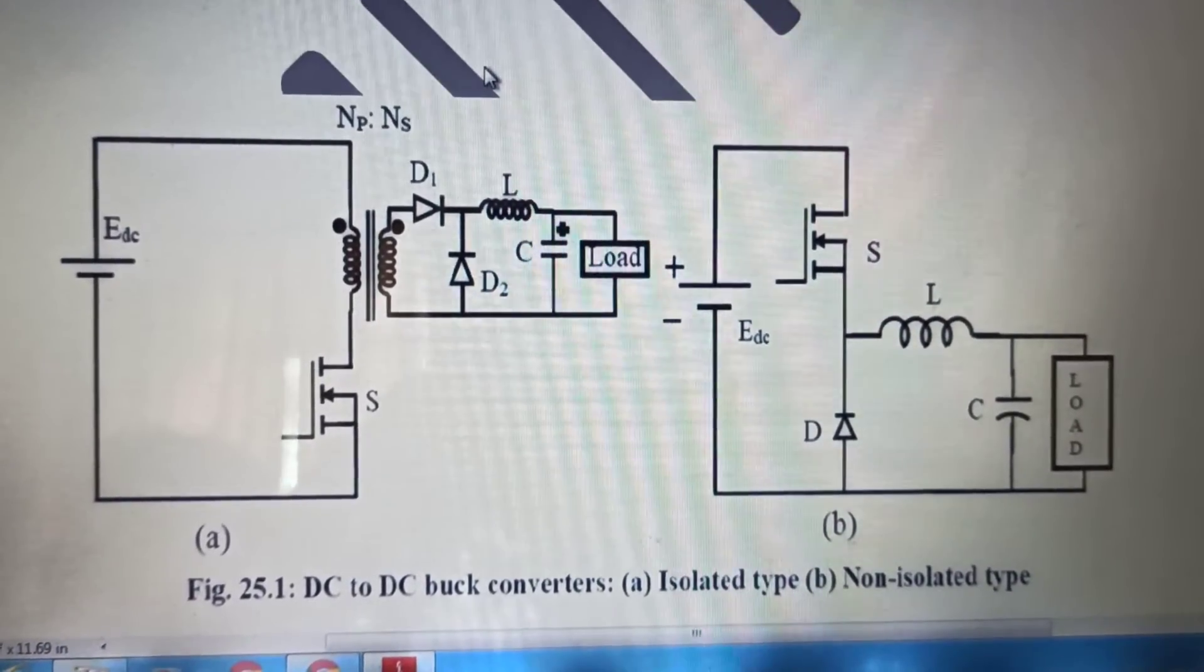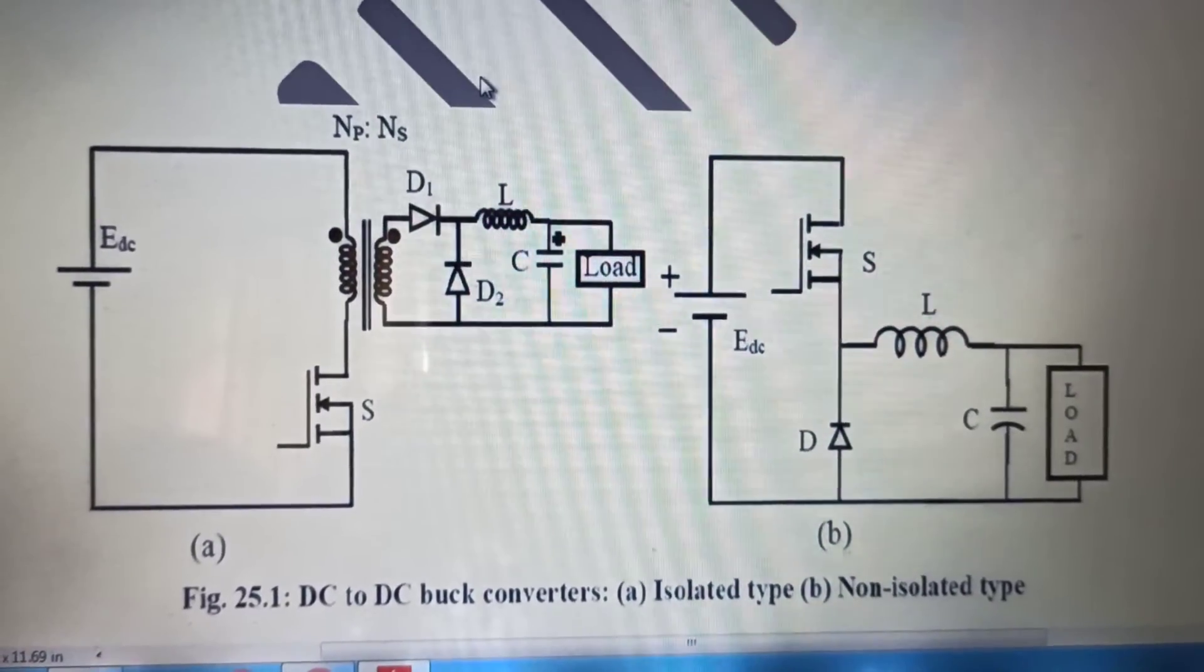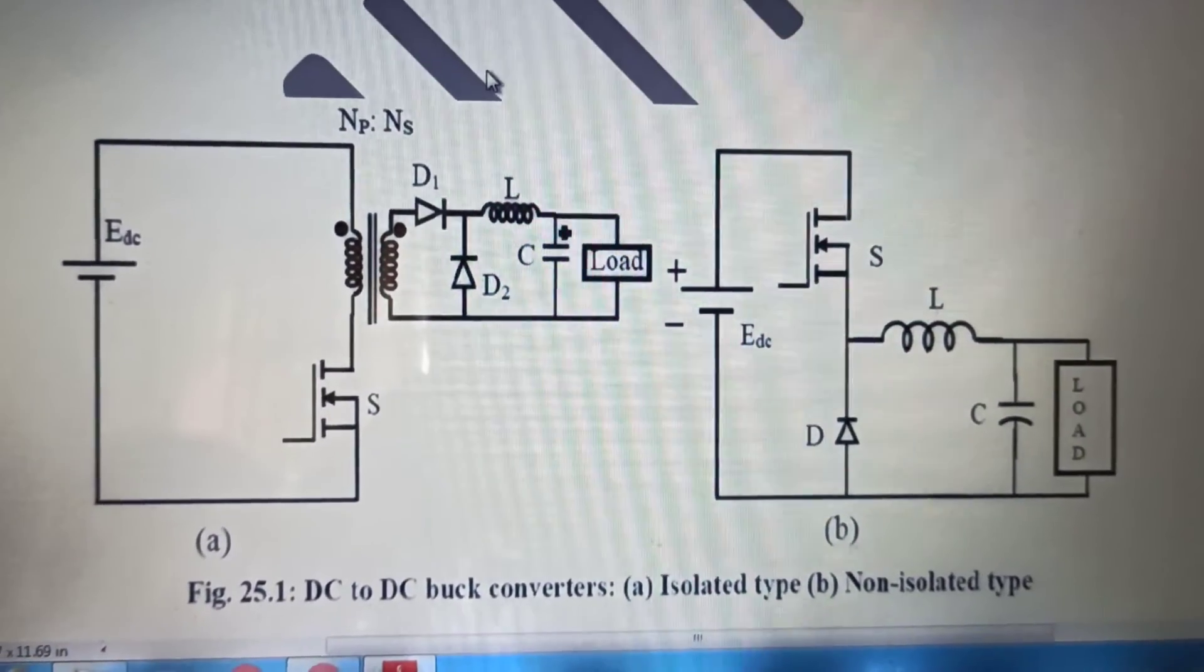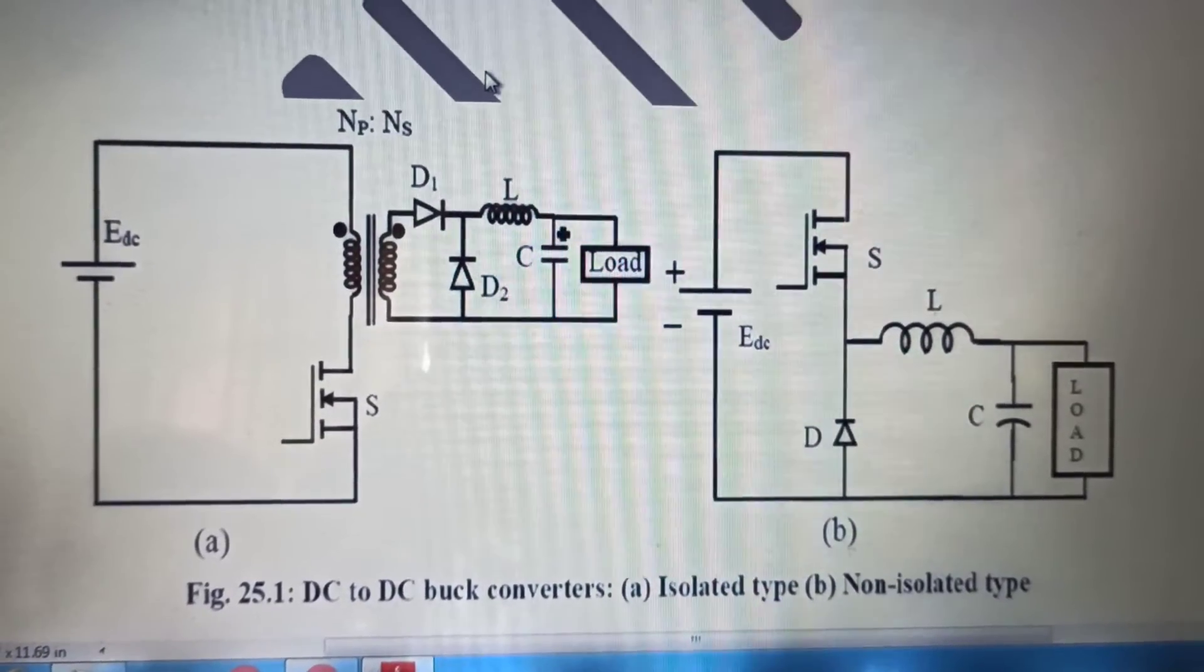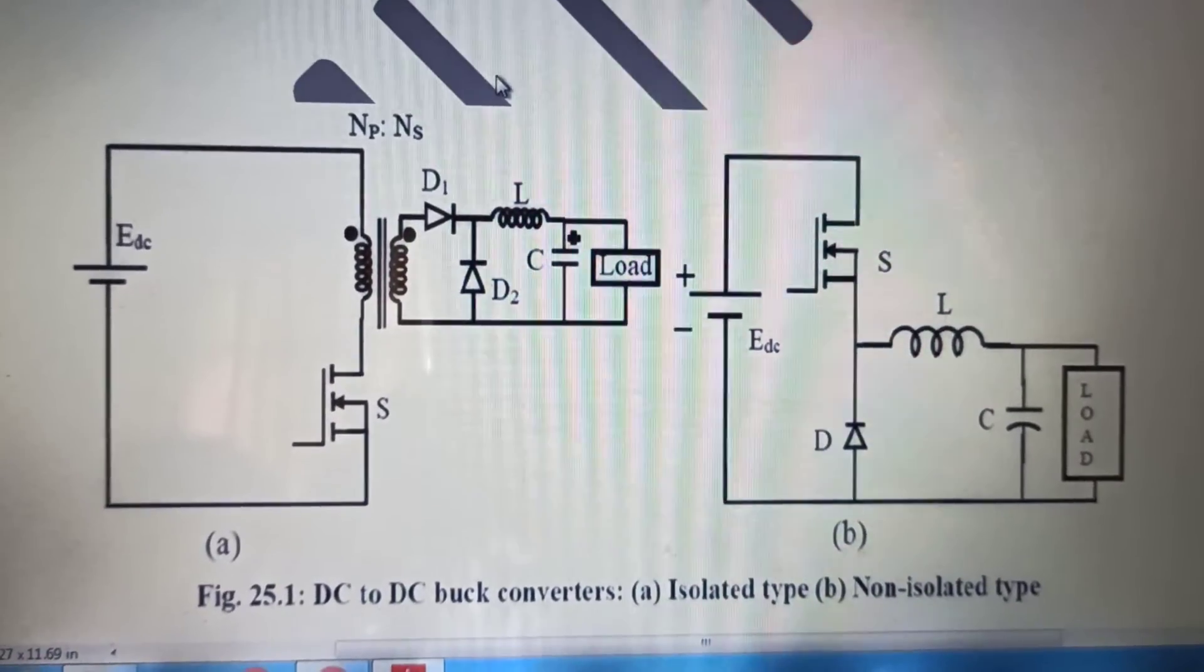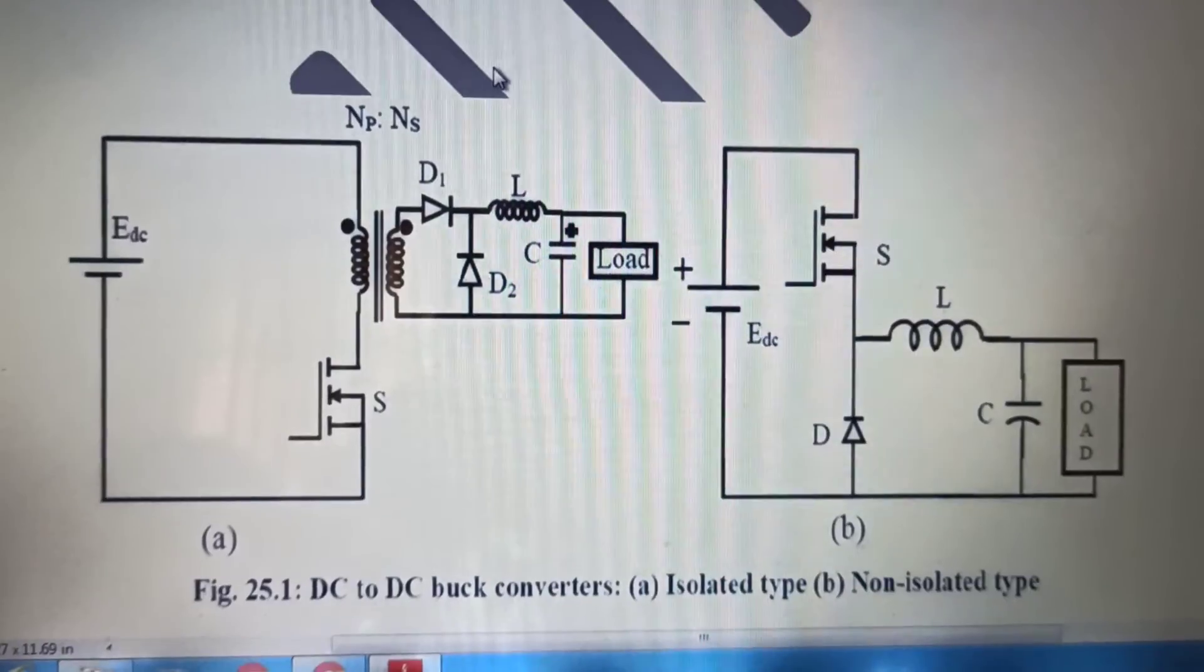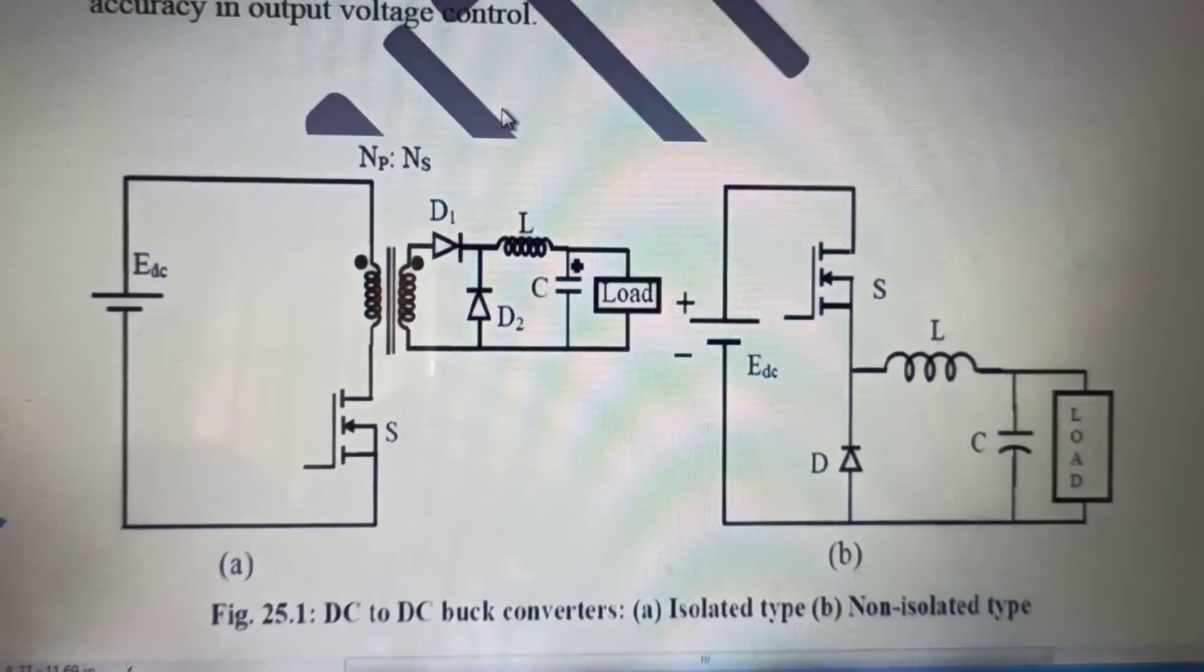Or what we say that, we cannot operate the transformer. So, we can supply this thing. Now, flux, magnetic flux is nothing but b equals to phi into a. That is phi has to be variable in nature. But phi has to increase. So, when the DC current flows through this switch.